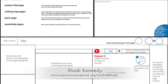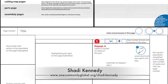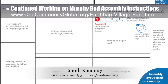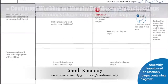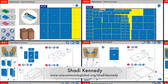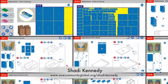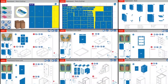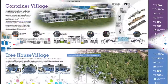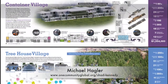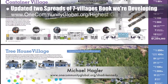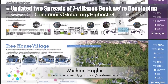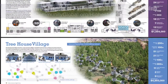Shoddy Kennedy, artist and graphic designer, completed his tenth week leading development of the murphy bed instructions. This week Shoddy started creating the style guide shown here, created version 1 of the cutting instructions, and updated the rest of the instructions with parts graphics proportionate to the actual pieces. Michael Haggler, senior graphic designer and artist, also updated the two spreads shown here with new content and imagery — all part of the seven villages book being developed.